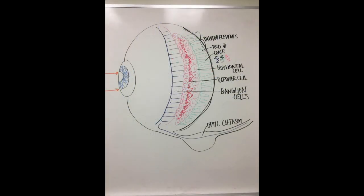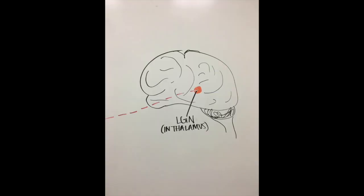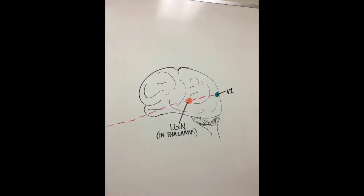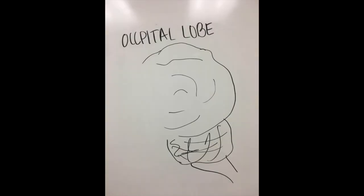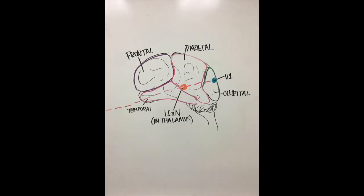From the eye, the light signal travels through neurons to the thalamus, or more specifically, the lateral geniculate nucleus, also called the LGN, and then crosses into a part of your brain called V1. V1 is part of the occipital lobe, or one of the four major brain areas which is considered to be the part of your brain that works with vision.